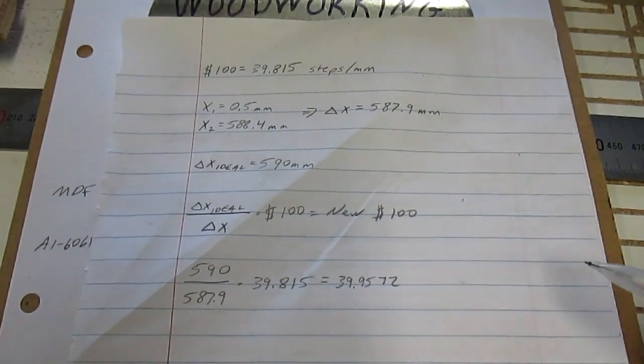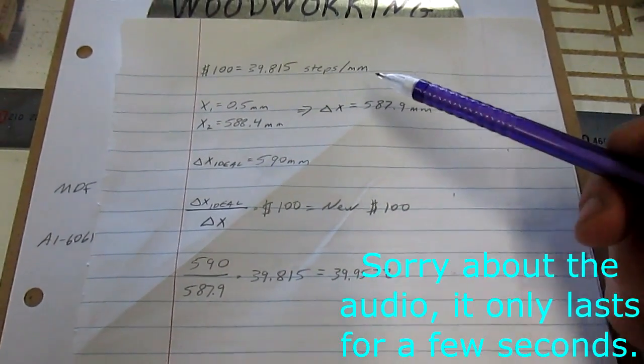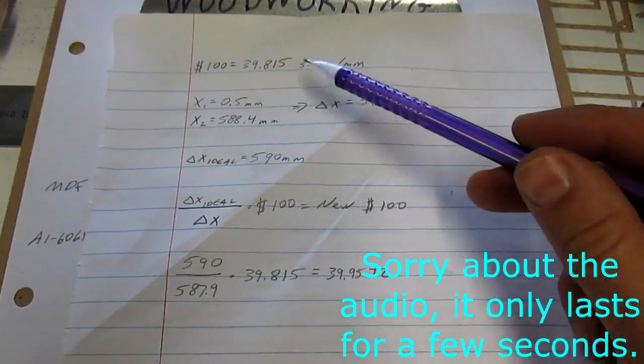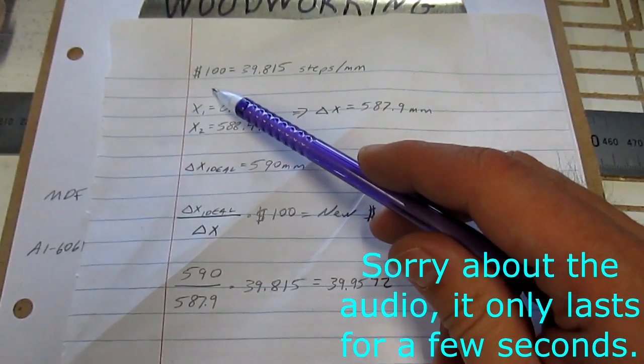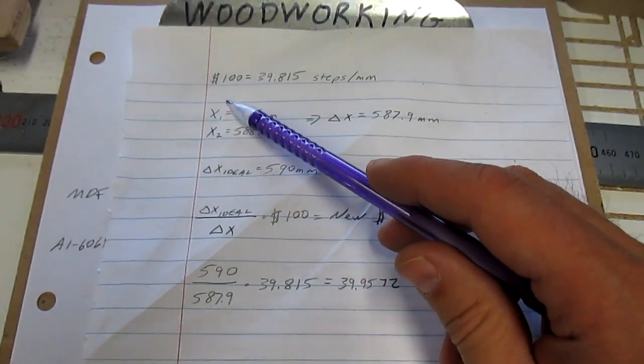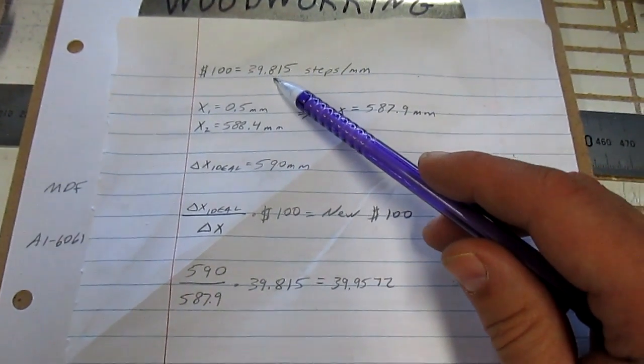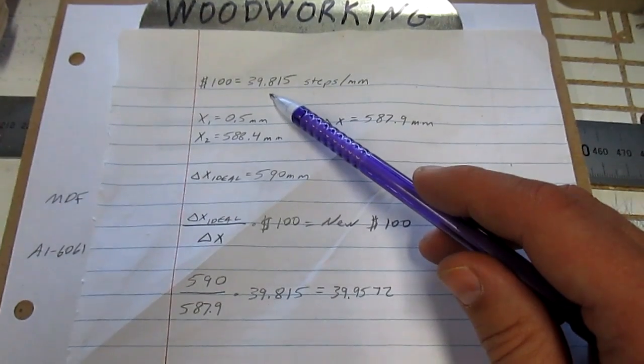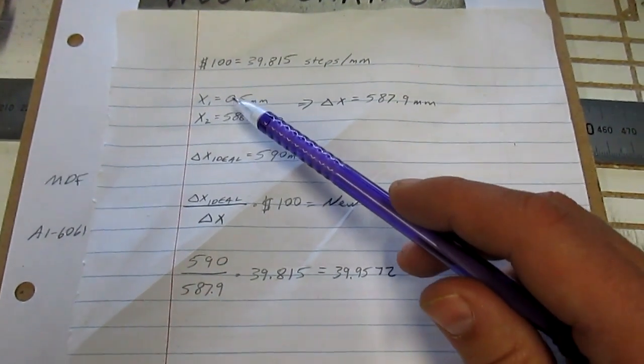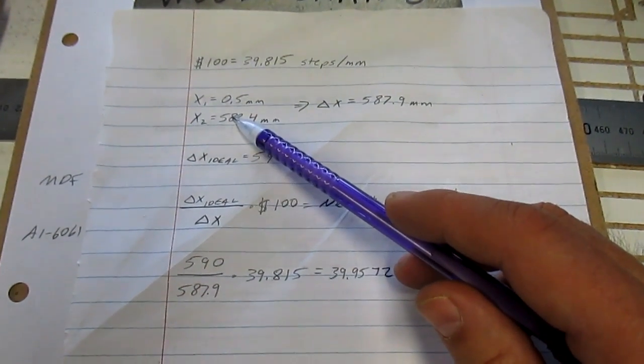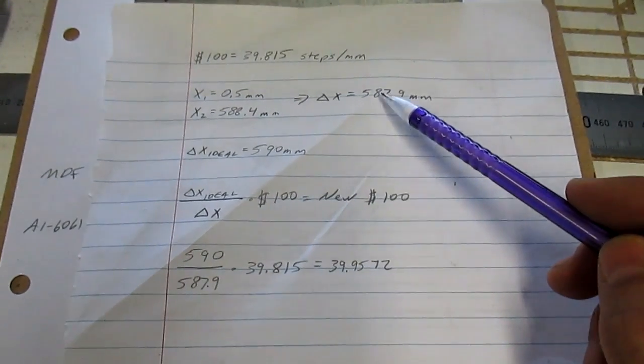Figuring out the new steps per millimeter is pretty easy. If you go to Easel's Machine Inspector, you'll find your $100 or 101, 102 depending on which axis you're looking at. Find out what that setting is. For me, I'd previously set it at 39.815. You've got your X starting spot, X ending spot. Figure out what the difference is between them.